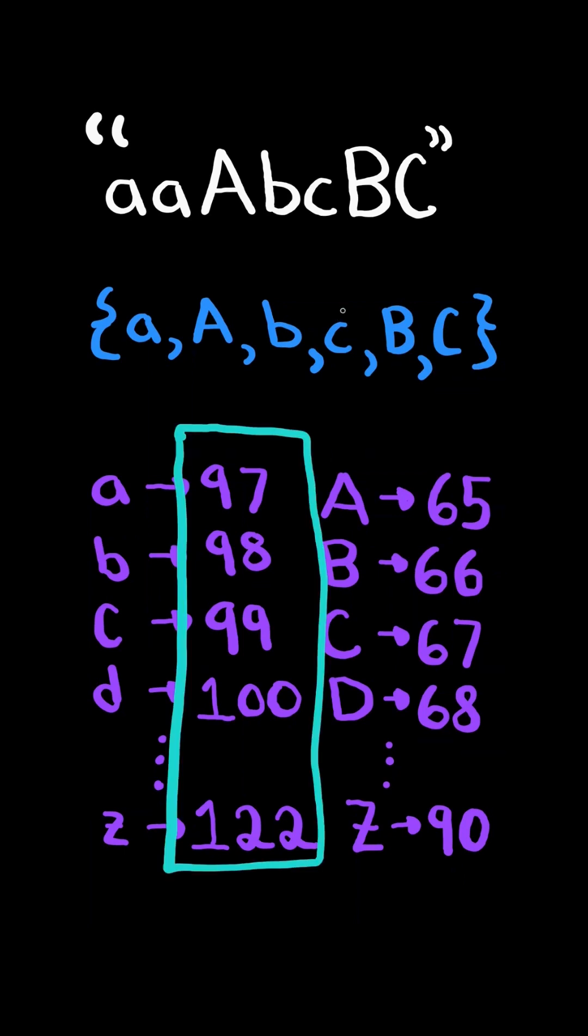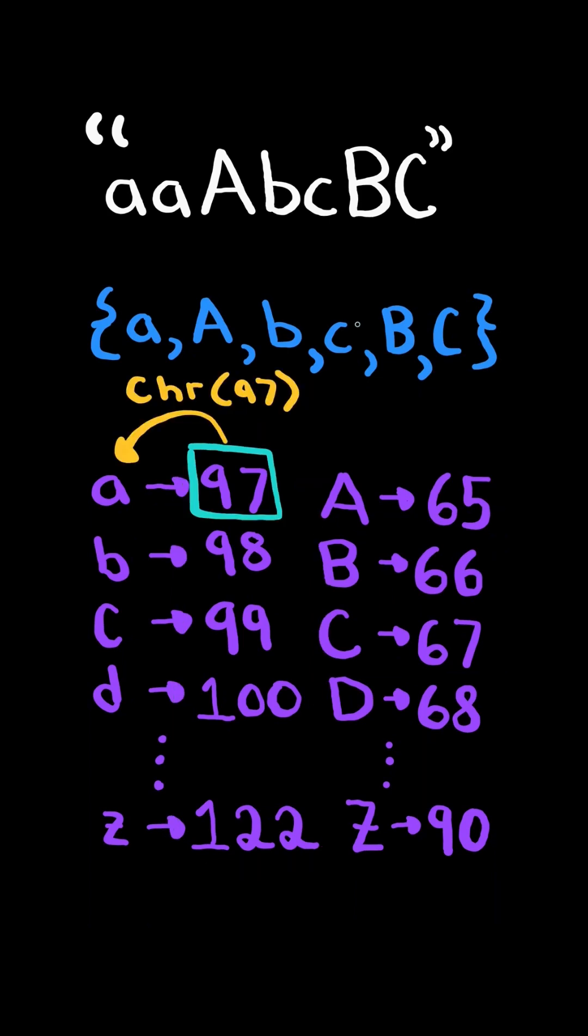We will iterate through the decimal representation of the lowercase English letters. We then take the decimal and input it into the char function to get its alphabetical letter, and notice the difference between upper and lowercase letters is 32. So we get the corresponding uppercase letter by subtracting the lowercase letter by 32.